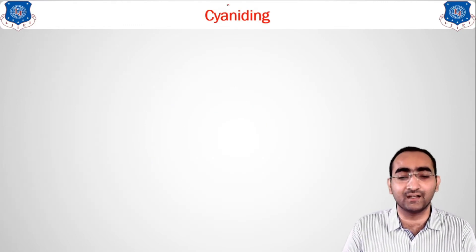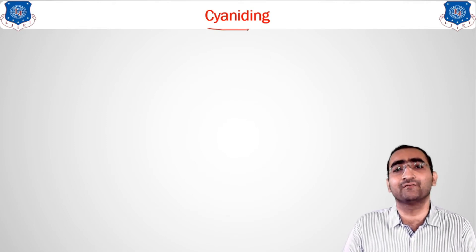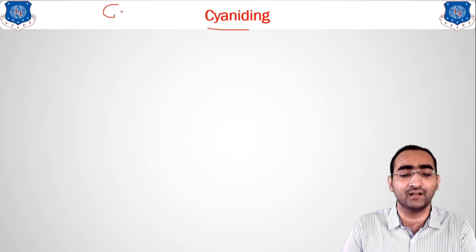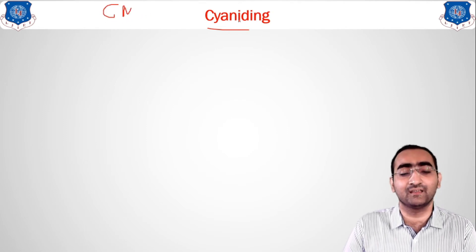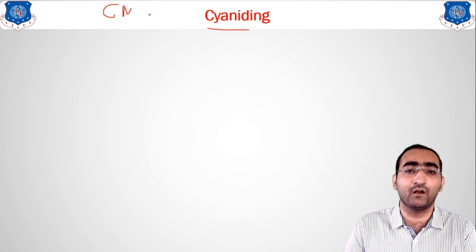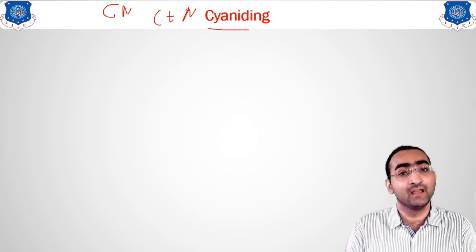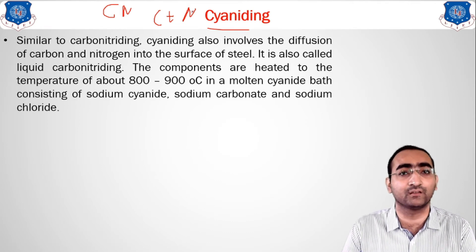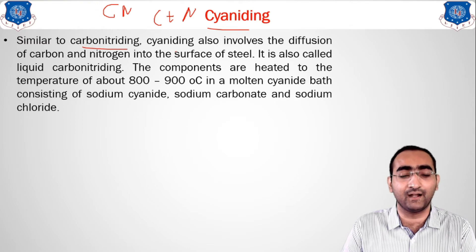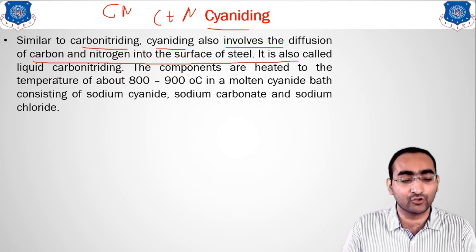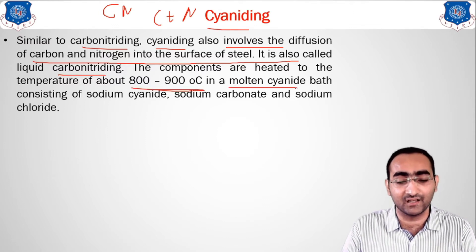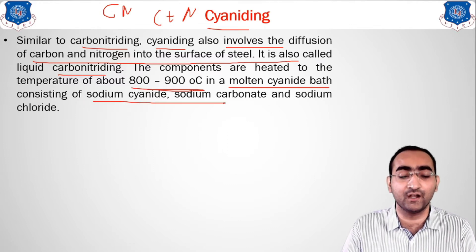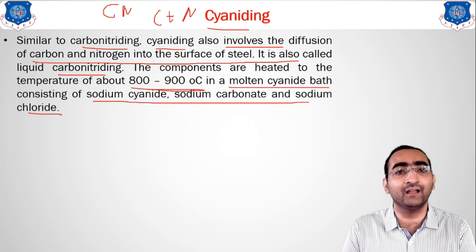The third method is cyaniding. Cyanide is a group of organic compounds written as CN. From the cyanide group, both carbon and nitrogen are released. Since we used carbon in carburizing and nitrogen in nitriding, here we use cyanide for both. Similar to carbon nitriding, cyaniding involves diffusion of both carbon and nitrogen into the surface of the steel — it is also called the carbon nitriding method. The component is heated to 800–900°C in a molten cyanide bath containing sodium cyanide, sodium carbonate, and sodium chloride.